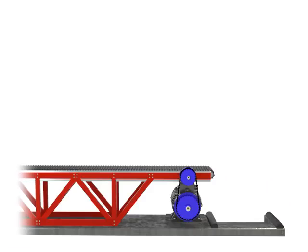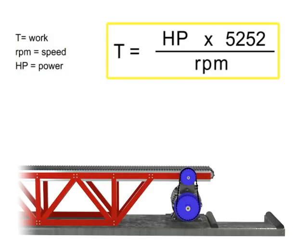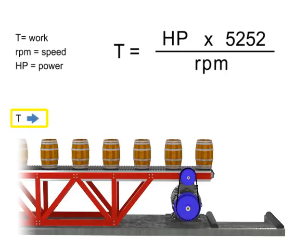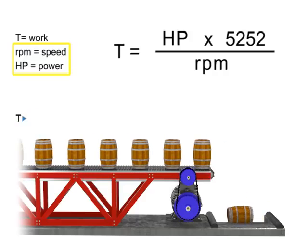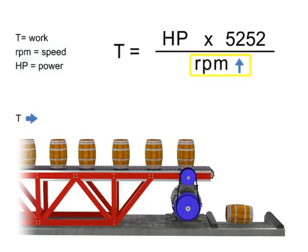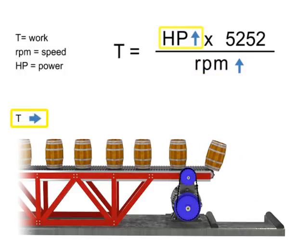You can manipulate the connection among speed, torque, and horsepower by understanding how they are related. The work accomplished here, the torque, is represented by the weight moving along the conveyor. If torque remains constant, speed and horsepower are proportional. As the speed or RPM increases, horsepower increases to maintain constant torque.